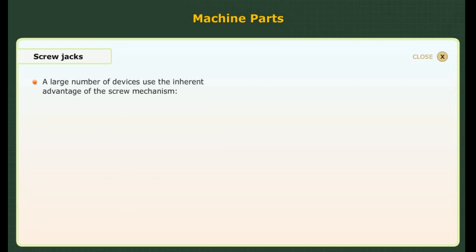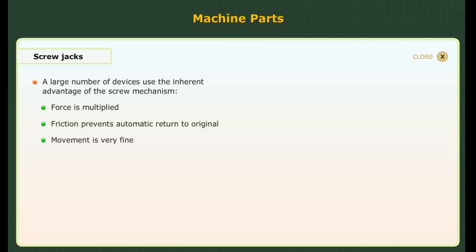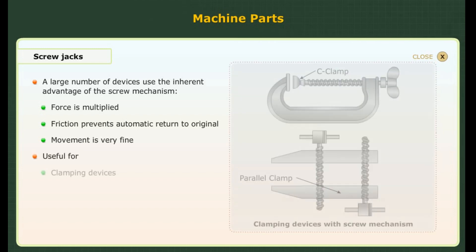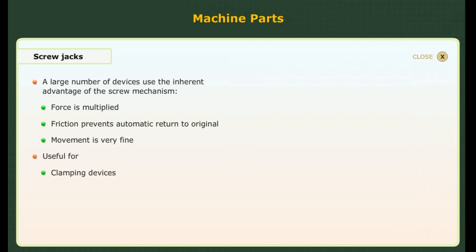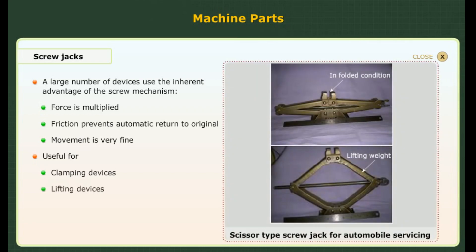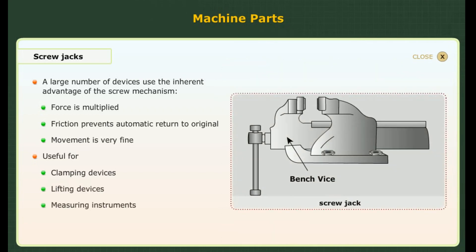A large number of devices use the inherent advantage of the screw mechanism: 1. Force is multiplied. 2. Friction prevents automatic return to the original position. 3. Movement is very fine. This is especially useful for: A. Clamping devices. B. Lifting devices. And C. Measuring instruments.